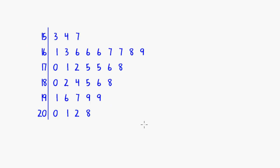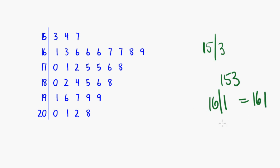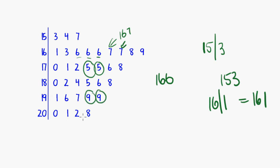What about finding the mode from a stem plot? Again, we just look for the observation that occurs the most number of times. In this stem plot, 15 bar 3 means 153, 16 bar 1 means 161, and so on. Looking at the observations: most occur only once. Here we've got something that occurs three times — that's 166. 167 occurs twice, 175 occurs twice, 199 occurs twice. But the one that wins is the one occurring three times, so the mode is 166.